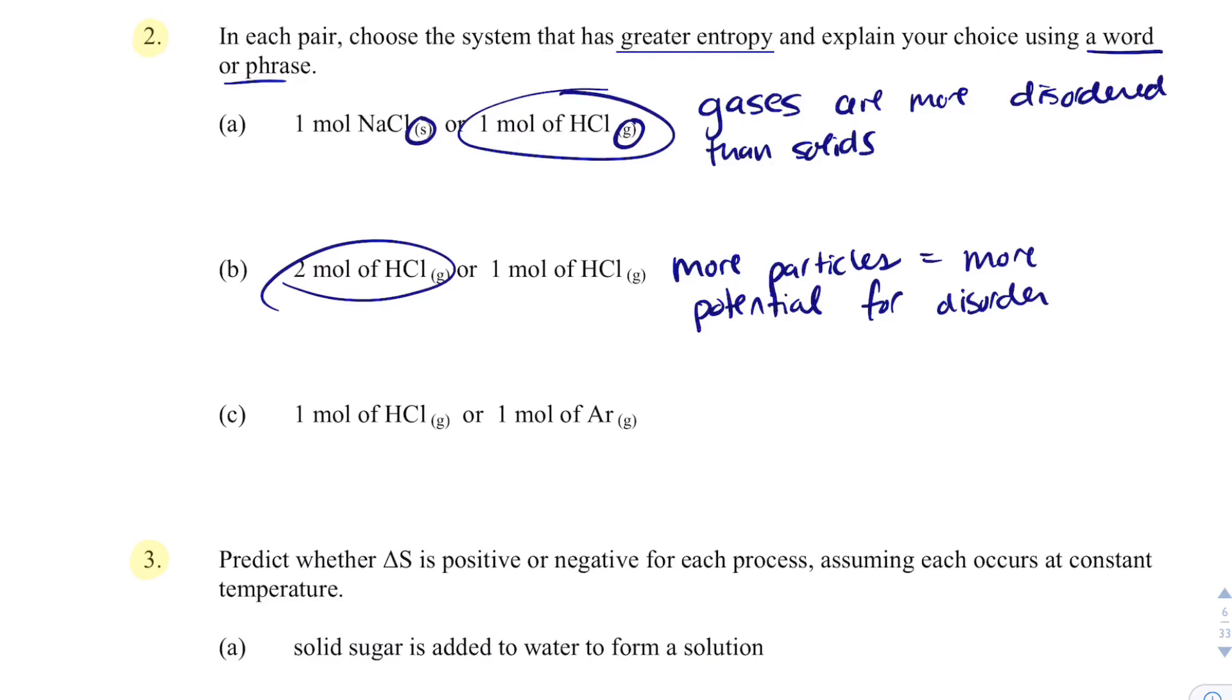If I have HCl versus argon, chlorine and argon are similar in size or in the same energy level, but HCl has a hydrogen, so that molecule is just going to be larger than an argon atom. So larger molecules are more disordered.